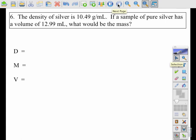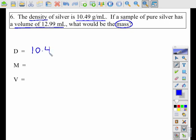Okay, last one. The density of silver is 10.49 grams per milliliter. If a sample of pure silver has a volume of 12.99 milliliters, what would be the mass? So it outright gives me the density, which is 10.49 grams per milliliter.